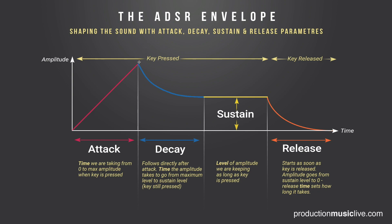Our attack time starts, followed by decay time, followed by sustain level. And sustain level ends as soon as our hand is leaving the piano key — the key is released. And then what follows is the so-called release time, bringing whatever sustain level we had before back to zero, no sound. So in the beginning we have no sound, in the end we have no sound, and in between we have ADSR.